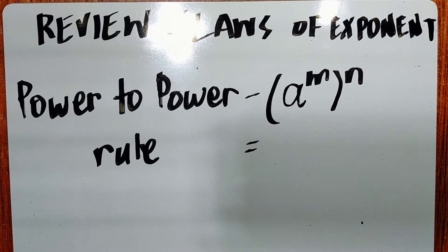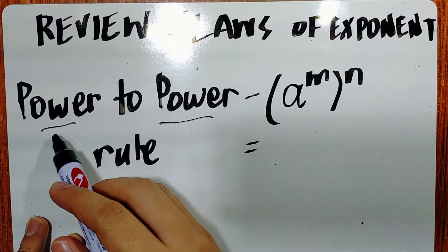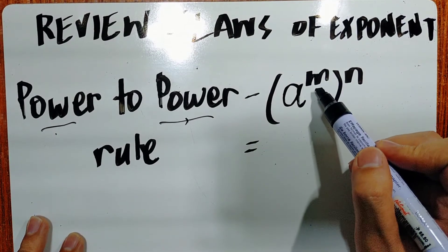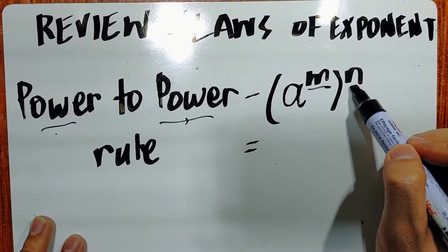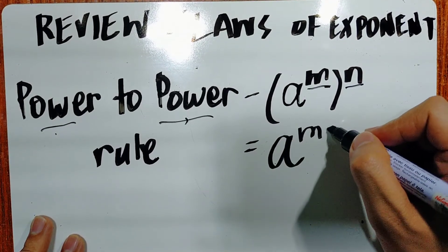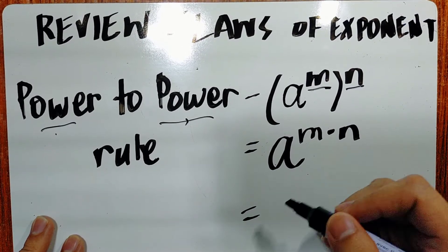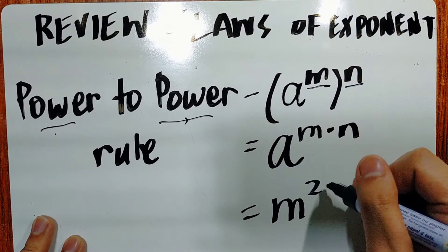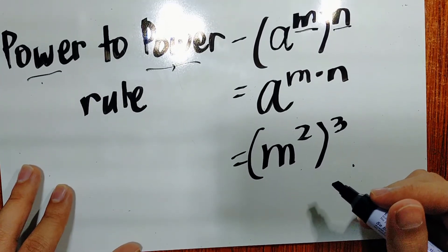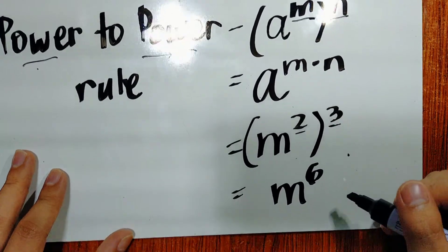Another rule is the power to power rule — 'power' is another term for exponent. What you do is multiply the exponent inside the parenthesis by the exponent outside, giving a raised to m times n. For example, m raised to 2, raised to 3: multiply the exponents, 2 times 3 is 6, so the answer is m raised to 6.